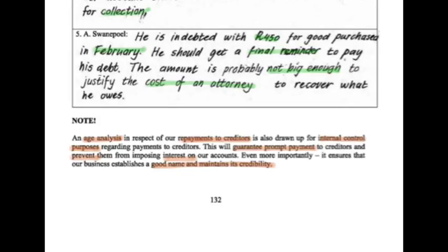An age analysis in respect of our creditors — our payments to creditors — is also drawn up for internal control purposes. This helps us manage our payments to creditors and determine which creditors need to be paid first and which last, because not all creditors have the same terms. Some allow 30 days, others up to 120 days. By doing this analysis, we can plot when we will pay whom, guaranteeing prompt payments to our creditors and preventing them from imposing interest on our account. Interest is charged when we pay late, which costs the business extra.